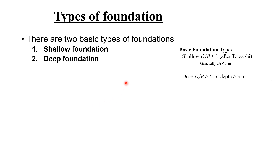There are two basic types of foundations: shallow foundations and deep foundations. The difference is given by Terzaghi. Shallow foundations are those where the depth of the footing to width of the footing is less than or equal to one, or generally where depth is less than or equal to three meters. If the depth-to-width ratio is greater than or equal to four, or depth is greater than three meters, then that is a deep foundation.